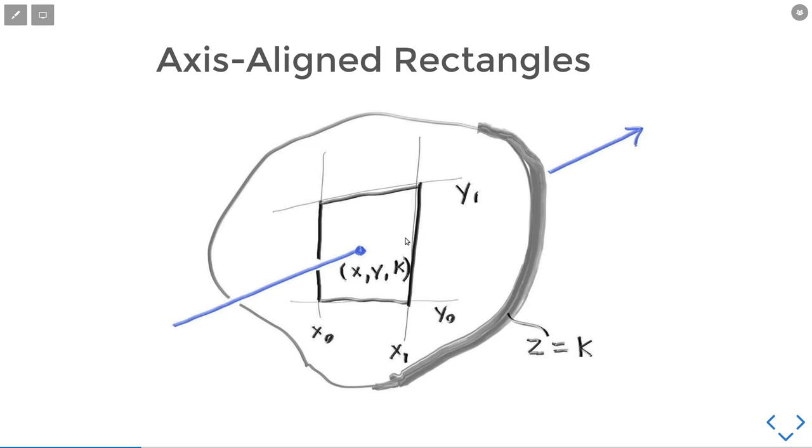When we talk about instancing, we will discuss how to apply transformations to this so we can rotate this rectangle into arbitrary angles.